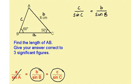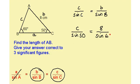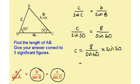I'm now going to substitute in the values I know from my diagram. So I have C over sine 50, because this angle is 50, equals 8, which is side B, over sine 60. I can now rearrange this to get C on its own: C equals 8 over sine 60 multiplied by sine 50. Typing this into my calculator gives me the answer 7.08 to three significant figures. Because we're finding a side, it's centimetres, so side AB is 7.08 centimetres.